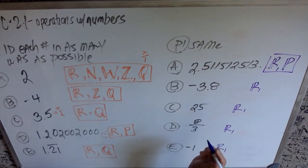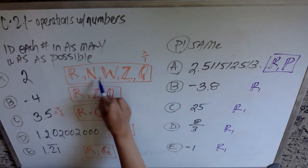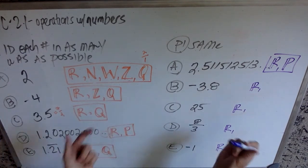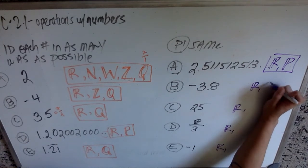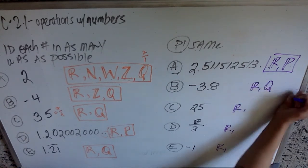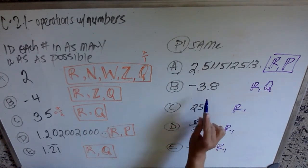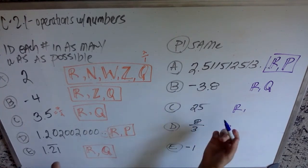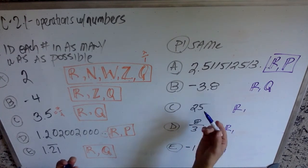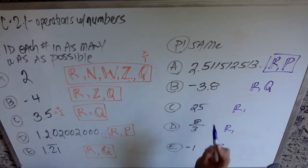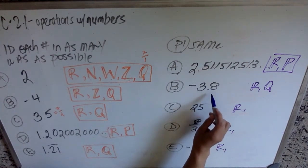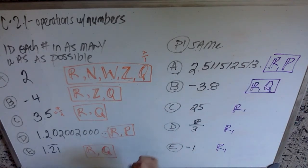Negative 3.8 is not any of these guys, N, W, or Z, because it has this decimal after the three. But it is going to be a rational number, because you could write this as a fraction. You write it as negative 38 over 10. Or you could simplify it if you wanted negative 19 over 5. Point being, it is a terminating decimal. It ends after the 8.